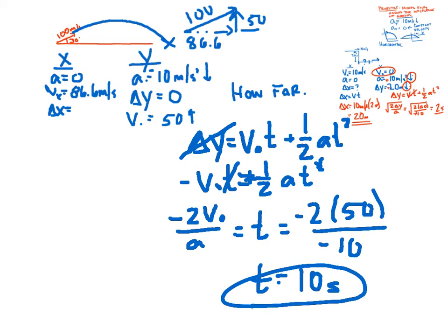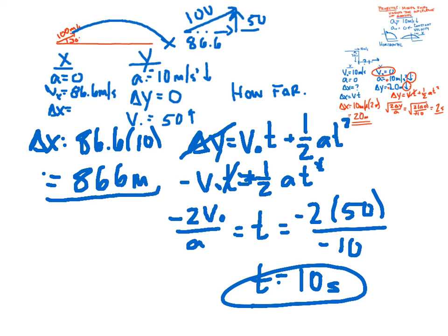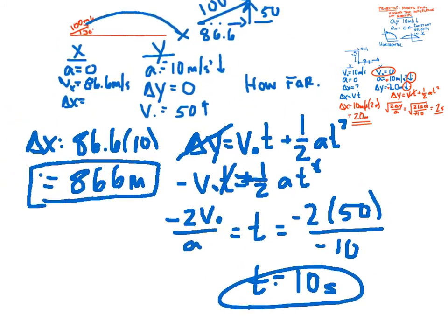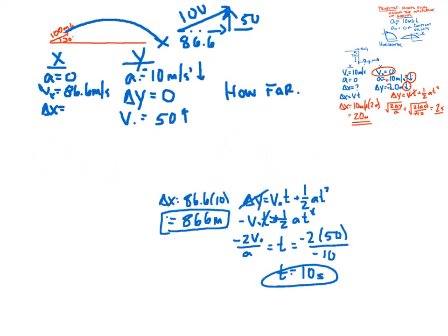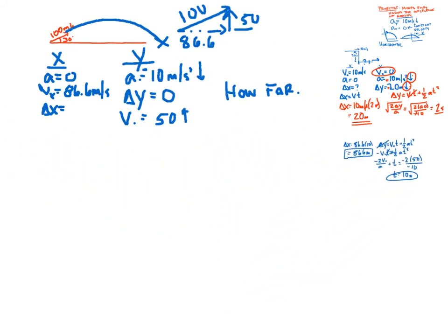So we take that, plug that in over here. And we see that our delta x is going to be our initial velocity in the x, 86.6 times 10. So our delta x comes out to be 866 meters. That answers the question, how far? We're going to take this same problem, leave that stuff up there. That answers how far.